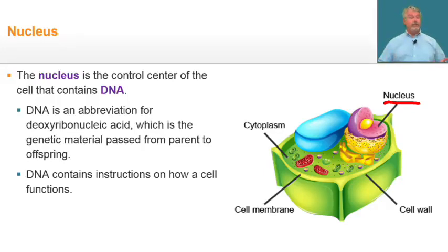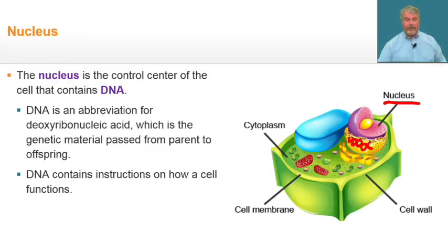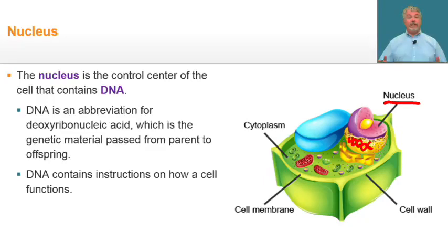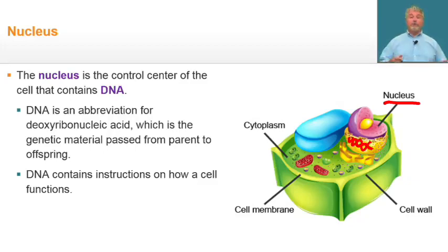Like a manager, the nucleus is known as the control center of the cell and it contains DNA. DNA is short for deoxyribonucleic acid. It's a nucleic acid that is the genetic material which is passed from parent to offspring. This nucleic acid also contains a set of instructions that tell cells how to function. That's why the nucleus is called the control center of the cell.